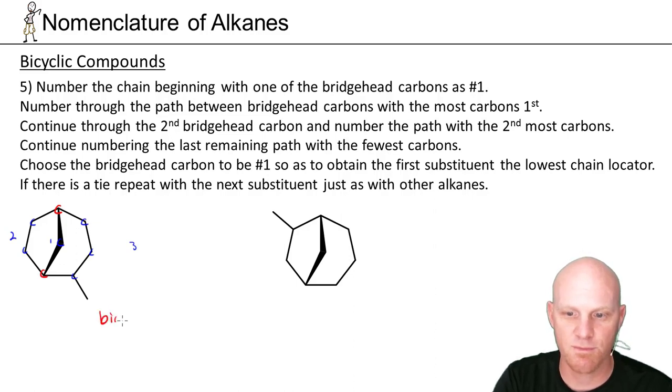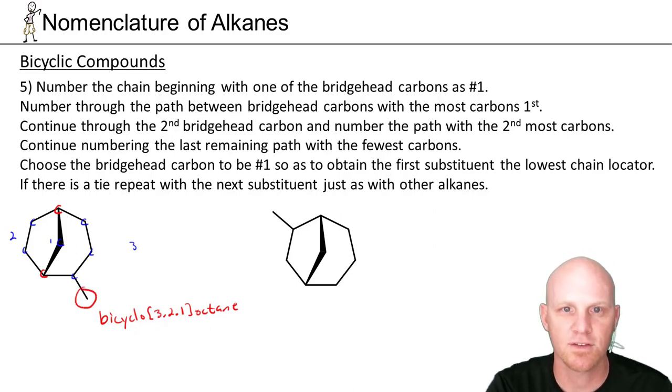Just like before, this thing's going to be some sort of bicyclo. And then three plus two is five, six, seven, eight for the bridgehead. So bicyclooctane with three, period, two, period, one. And again, octane. But in this one case, we've got a methyl group attached to our bicyclooctane, and so we've got to figure out how to number that.